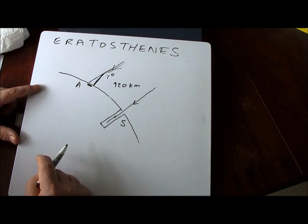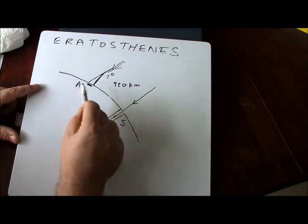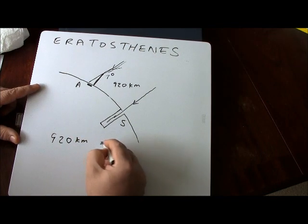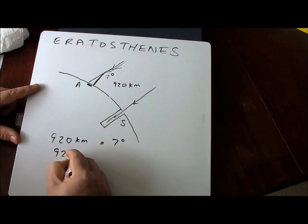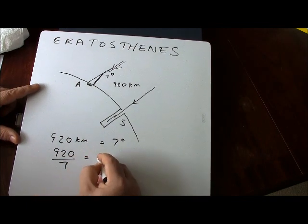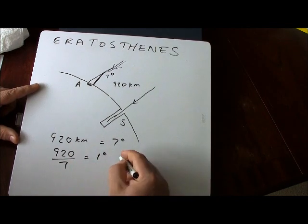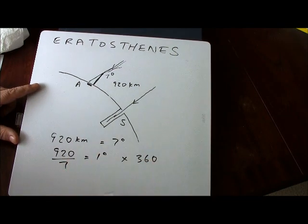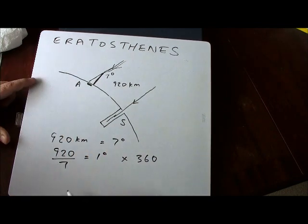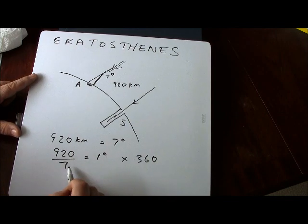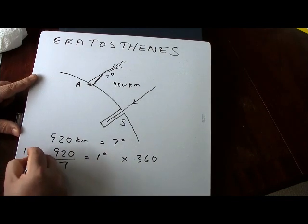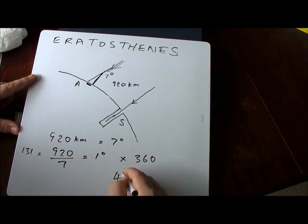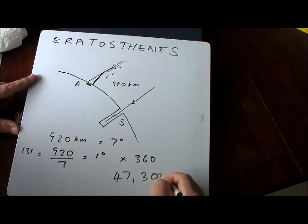They measured the distance as accurately as they could and got a value of 920 kilometers — obviously they didn't use kilometers in those days, but that's the converted distance. So if 920 kilometers corresponds to seven degrees, then 920 divided by seven gives the distance per degree, which is about 131 kilometers. Multiply that by 360 degrees and you get the circumference of the earth: 47,300 kilometers.